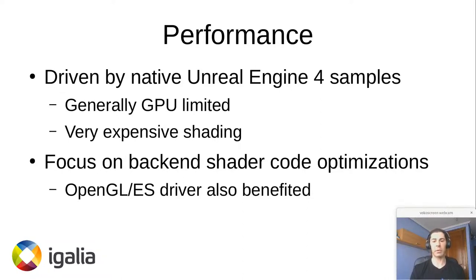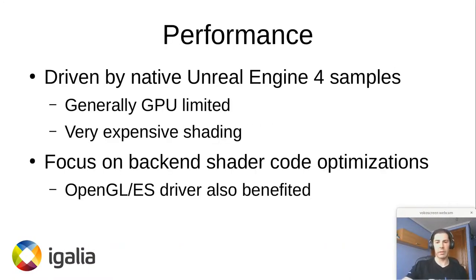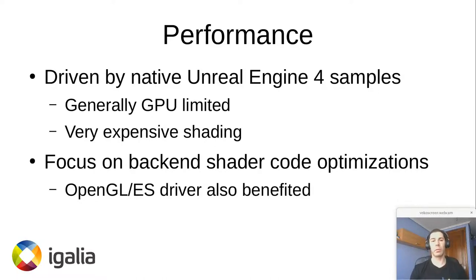There was only one game that at some points was CPU limited — a racing game on the bottom right. The issue was that the game was emitting a very large amount of occlusion queries, and our implementation for that was not optimal. We improved that, which got rid of the CPU limitation. Otherwise, we were GPU limited, and we found that these Unreal Engine 4 samples were a lot more expensive in terms of shading than anything we had run through the driver before.